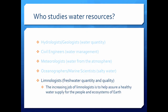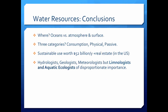Hydrologists, geologists, civil engineers, meteorologists, oceanographers, and limnologists all study these things, but the increasing job of limnologists is simply to help assure a healthy water supply for the people and ecosystems of the Earth — and you need to understand how those systems work before you can do that. The conclusions from this module: the waters of the Earth are in the oceans, atmosphere, and surface waters; there are three categories of use — consumption, physical, and passive; the value of water is extremely high; and limnologists and aquatic ecologists are of disproportionate importance because they bridge all those fields.